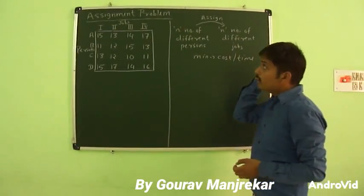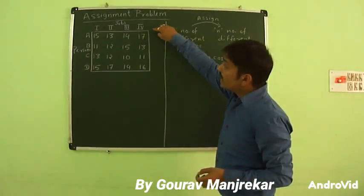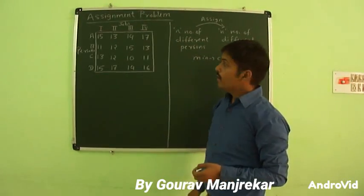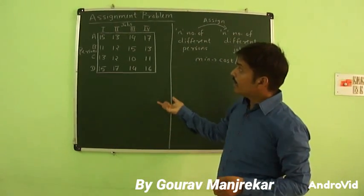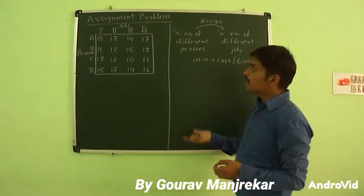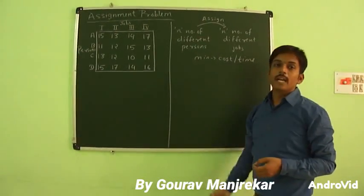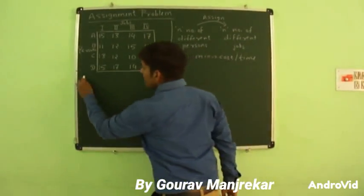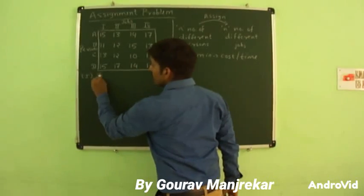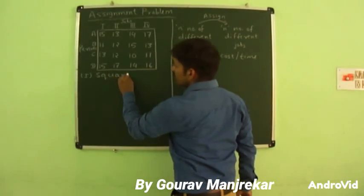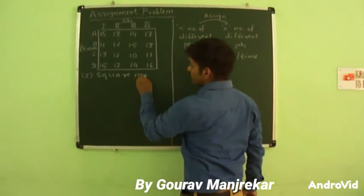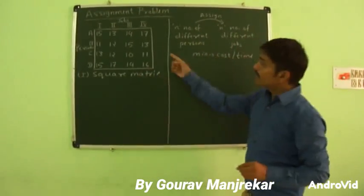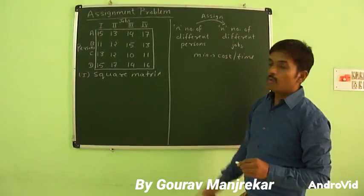We solve the assignment using the Hungarian method. In the Hungarian method we follow certain steps. The 1st step is that our matrix should be a square matrix. In our example, our matrix is already square.